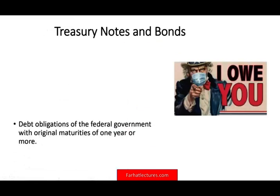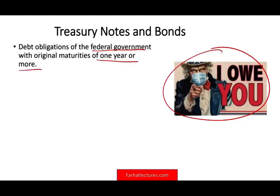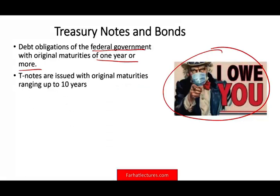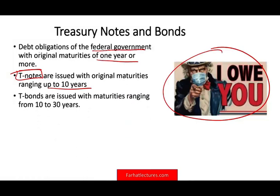Treasury notes and bonds are debt obligations of the federal US government. T-notes are issued for up to 10 years; T-bonds are from 10 to 30 years. If it's less than one year, it's a T-bill, which we covered in the prior session. Both may be issued in increments of $100, but commonly come in denominations of $1,000, so practically anyone can participate.